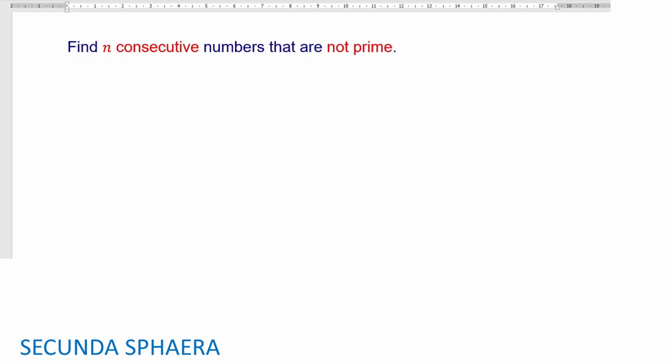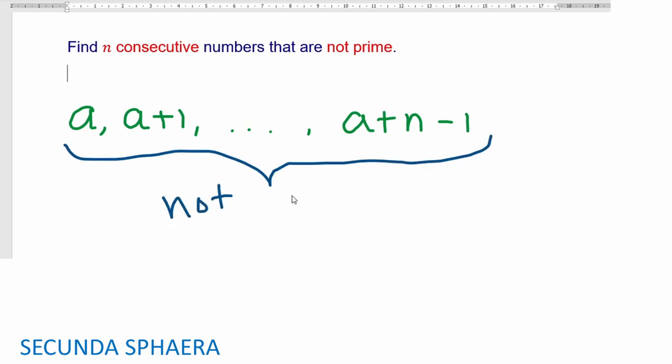However, this question is pretty simple. It has a somewhat straightforward answer, and that is a consequence not because of prime numbers but because there is one property of one common mathematical operation. We want to find a number a, number a plus one, and if we go all the way to the number a plus n minus one, all of these numbers are not prime. I'll let you have a couple of minutes to try and figure out how to answer this question.